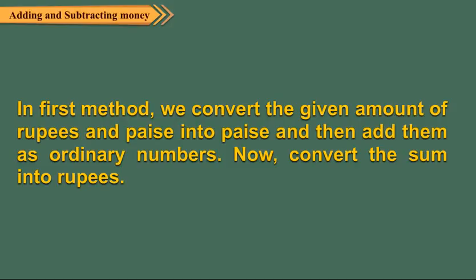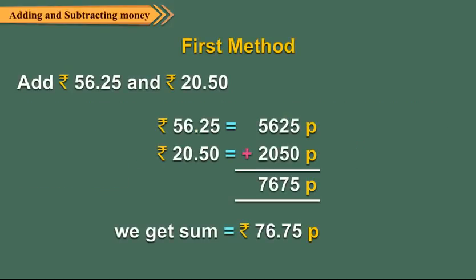In the first method, we convert the given amount of rupees and paise into paise and then add them up as ordinary numbers. Now convert the sum into rupees. Look at the example shown here.